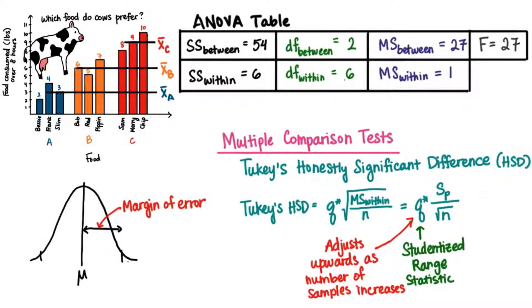Remember that if a sample mean was further away from the population mean than the margin of error, it was considered unlikely. Well, if two sample means are further apart than the Tukey's HSD, then that's considered honestly significantly different.